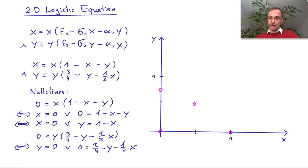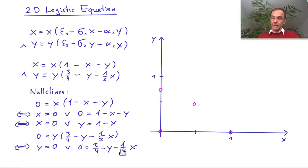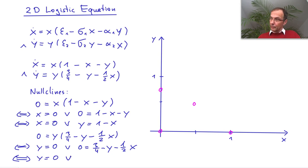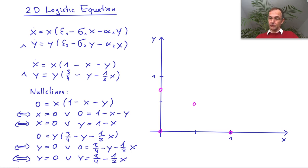Again, that gives two possible solutions: y can be zero, or the second factor can be zero. And we can rearrange the second factor to get x dot equal to zero as well.